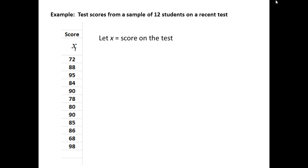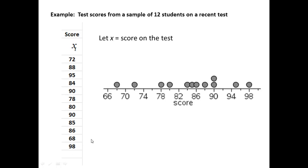Our next example is test scores from a sample of 12 students on a recent test. If we let x equal the score on the test, then x sub i represents each of the individual scores — 72, 88, down to the twelfth one of 98. Here's a graph of the data. Try to visualize where you think the mean or the balance point of this set of data would be.